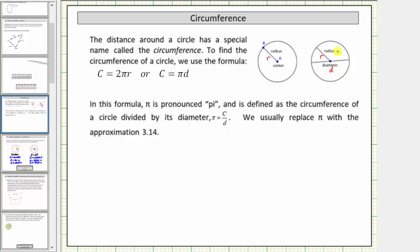For example, if we consider this circle here, if we determine the circumference, which is the distance around the circle, and divide by the diameter, this will give us the value of π. We often replace π with the approximate value of 3.14 or 22/7.